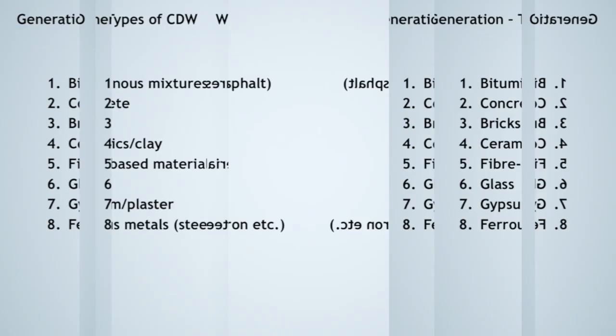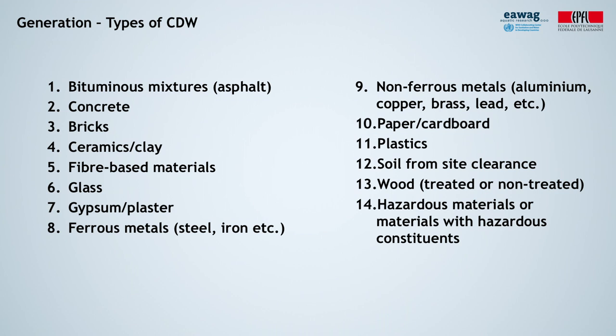In terms of the individual components, we consider 14 categories of materials as the main constituents of construction and demolition waste. You are welcome to pause this video for a second to have a more detailed look at the list.